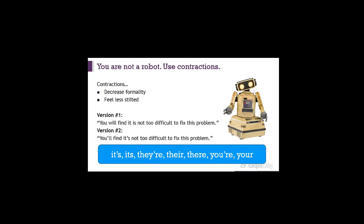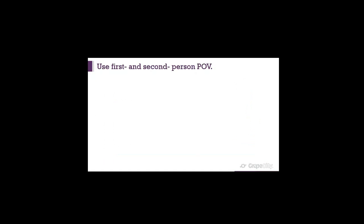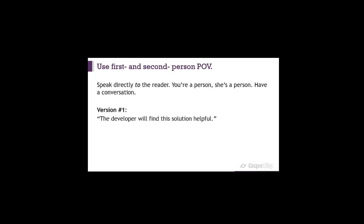Know the difference between 'it's/its,' 'there/their/they're,' and 'your/you're.' If you're not sure, go look them up, internalize them, post them on your wall. These are frequently misused, and people on the internet will judge you for it. Also, use first and second person point of view — speak directly to the reader. Instead of 'the developer will find the solution helpful,' say 'I think you'll find the solution helpful.' Have a conversation.